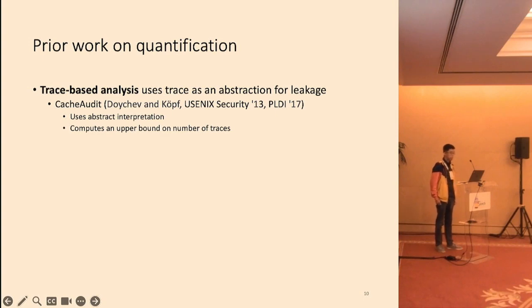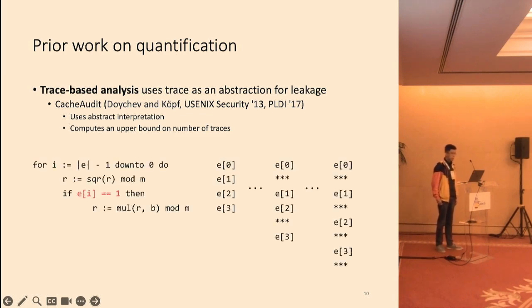On the quantification side, previous work, including CacheAudit, used trace as the abstraction. We believe trace is also not a good abstraction to deal with cache side channels, because they don't provide enough information for mitigation. Let's go back to this example. On the right-hand side, you can see a list of all traces a program can produce. If two traces differ in one location, it is very hard to pinpoint which instruction in the source code causes a difference, because different traces have different lengths. In other words, the traces lack structural information about the program, which we need to fix the code. We therefore argue that trace is also not a good abstraction.